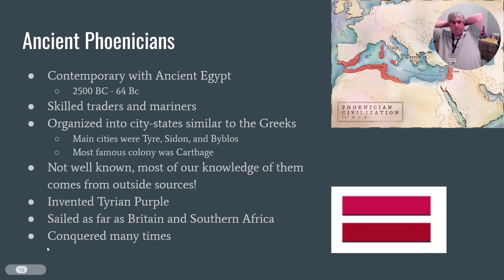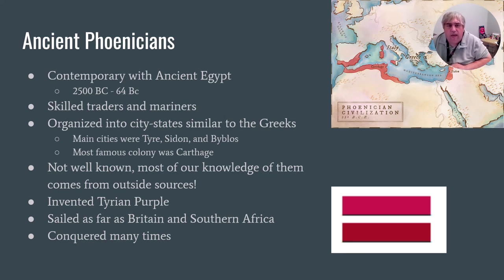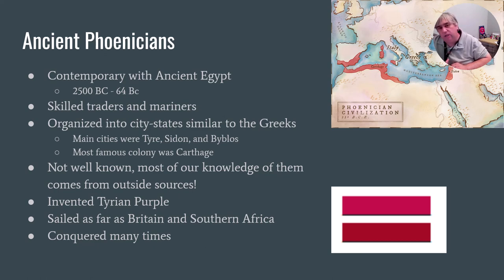Quickly, I want to mention the ancient Phoenicians because they're somewhat related to this. The ancient Phoenicians lived north of ancient Egypt — basically in what is today Syria and Lebanon. They were very skilled traders and ocean farers, and they set colonies out all over the place. One of the colonies they settled is Carthage, which will be important when we get to ancient Rome. The last thing to note is they invented a color called Tyrian purple — a purple that could not be matched anywhere — and this purple color became the symbol of monarchy and power.